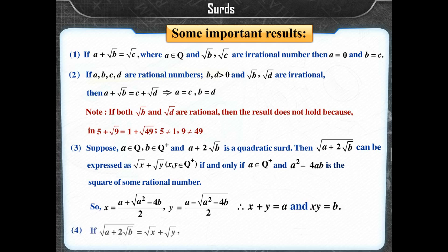Result 4: If √(A + 2√B) = √X + √Y, then √(A − 2√B) = √X − √Y.